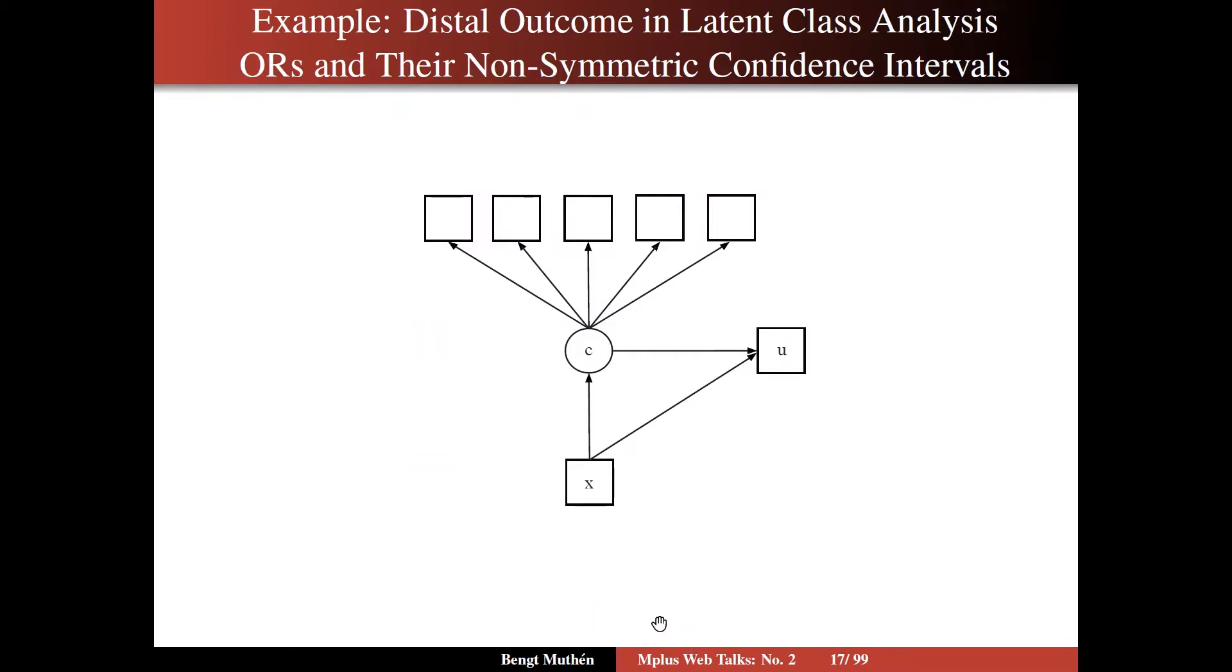Let's take an example of logistic regression here, distal outcome in latent class analysis. We're going to look at odds ratios and their non-symmetric confidence intervals. We have five latent class indicators and the latent class variable C and covariate X that predicts the latent class probabilities but also predicts a distal outcome U. U is in this case regressed on two variables, on X and on C.